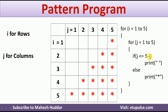That can be written as: print a blank if J is less than or equal to 5 minus I. In the first iteration, I equals 1, so 5 minus 1 equals 4. If J is less than or equal to 4 — that is J equals 1, 2, 3, 4 — we draw a space. Similarly, in the second case, if I equals 2, it becomes 5 minus 2, which is 3. When J equals 1, 2, 3, we draw a space. In all other cases, we draw a star.